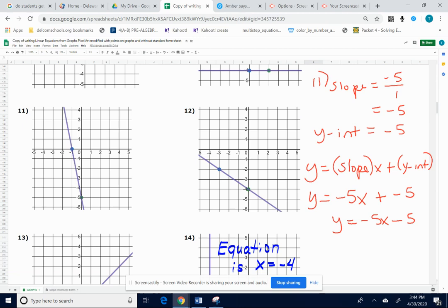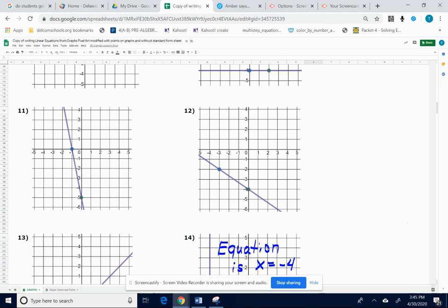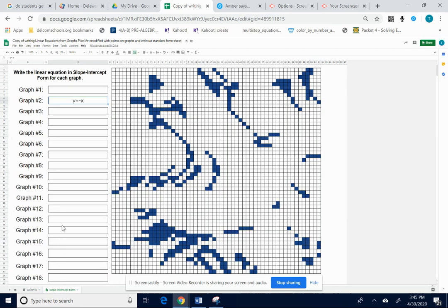But that's what you would have to type in the puzzle to get the color to come up. So number 11, y equals negative 5x minus 5. So I'm going to click slope-intercept form page. I'm going to go down to graph 11. I'm going to click on it. And I'm going to type in y equals negative 5x minus 5. I'm going to click enter.